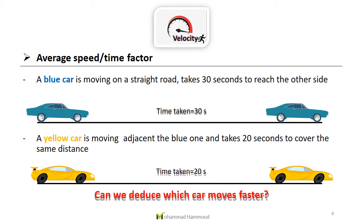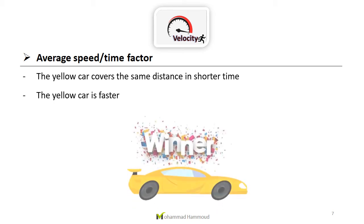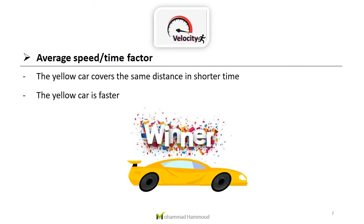We have two cars: a blue car and a yellow car. The blue car is moving on a straight road and takes 30 seconds to reach the other side, while the yellow car covers the same distance in 20 seconds. Can we deduce which car moves faster? They covered the same distance — the blue car in 30 seconds and the yellow car in 20 seconds. The yellow car covers the same distance in a shorter time, so we say the yellow car is faster than the blue car.